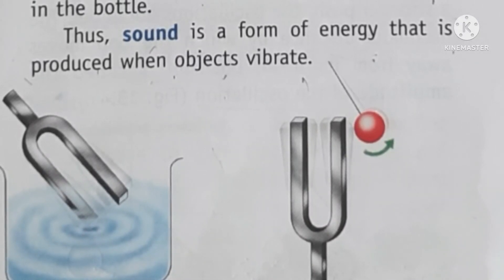But when there is to-and-fro motion from a fixed position, the object moves rapidly. The faster the movement, the faster the sound is produced. This to-and-fro movement is vibration. So we can say that sound is produced by the vibration of an object.